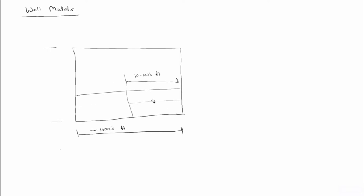So if we're going to place a well into one of these grid blocks, the only real place we have information is at the center, so we place the well at the center. The radius of the well might be on the order of eight inches or so. And so we have this eight-inch well in a grid block that can be tens to hundreds of feet in size.